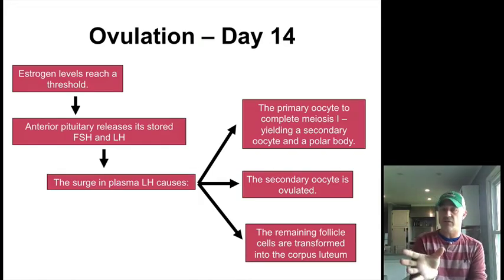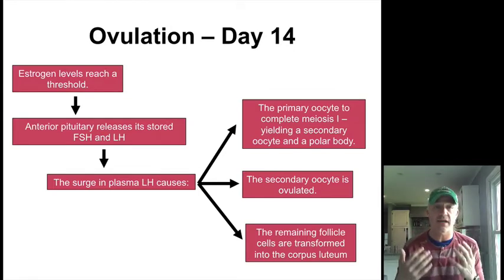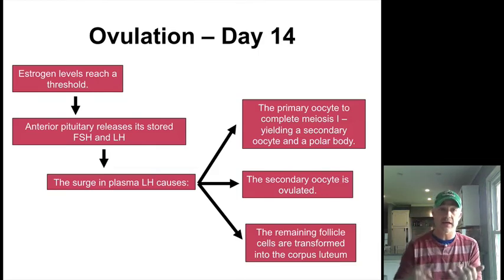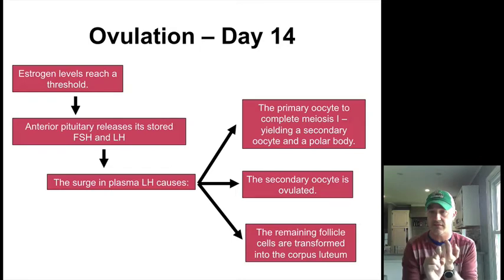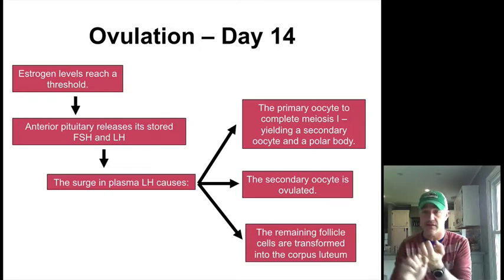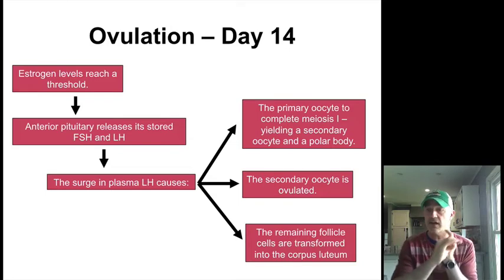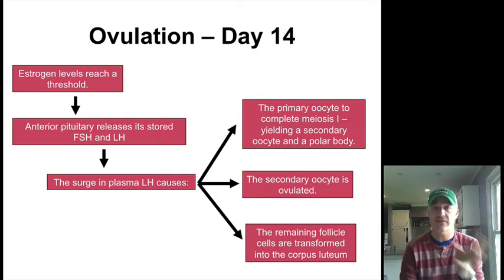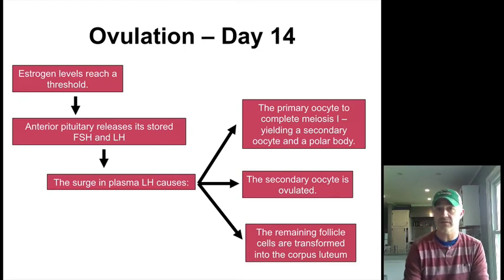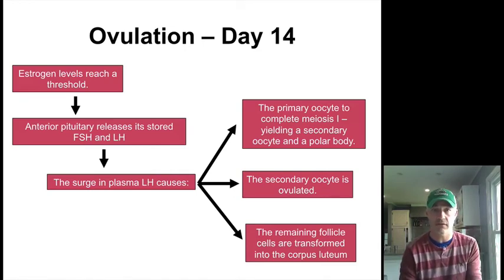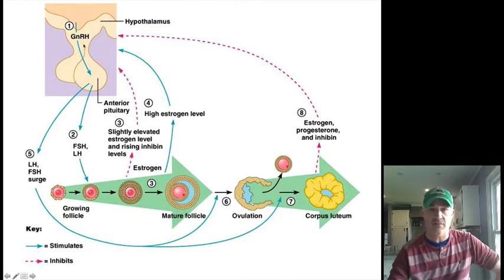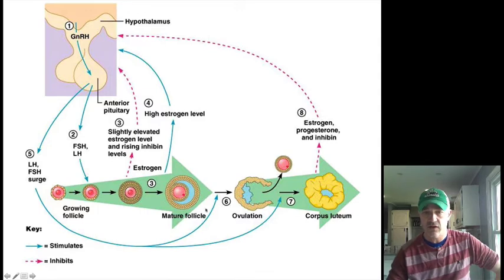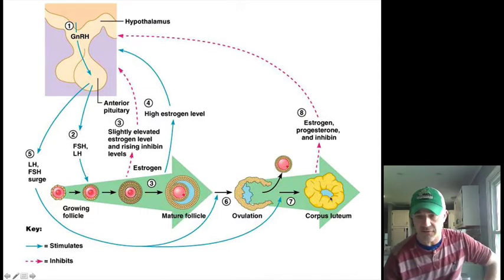At about the midpoint, when ovulation happens, the estrogen levels have built up to a threshold. This causes all that stored FSH and LH to be released, and it's really the surge of LH that does several things: it causes the primary oocyte to finish meiosis one and become a secondary oocyte, it causes that oocyte to be ovulated, and it converts the remaining cells in the follicle to the corpus luteum. So now we have this oocyte traveling down the fallopian tubes.